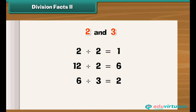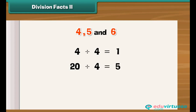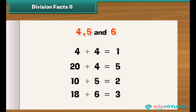Now, let us look at the division facts of four, five, and six. Four divided by four is one. Twenty divided by four is five. Ten divided by five is two. Similarly, eighteen divided by six is three.